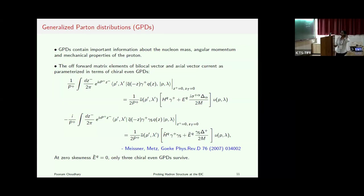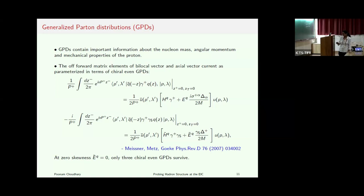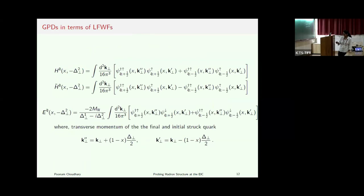Now we will see some GPD results. GPDs contain information about the nucleon mass, angular momentum, and mechanical properties of the proton. The forward matrix elements of vector currents can be parametrized in terms of two GPDs H and E, and similarly the axial vector current can be parametrized in terms of two other chiral-even GPDs H-tilde and E-tilde. We are mainly discussing the chiral-even GPDs. In the case of H, both the proton and active quark do not change helicity state, while for E the proton changes its helicity state. We will look at GPDs at skewness zero, so E-tilde will vanish.